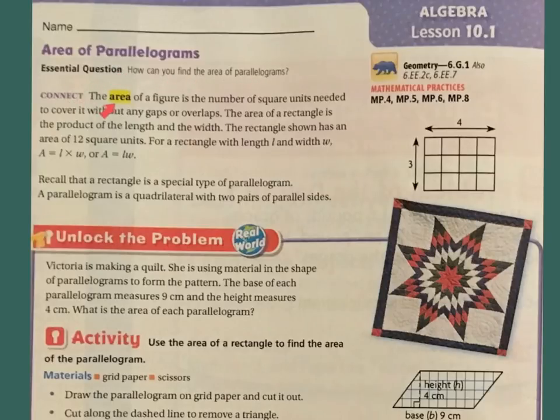Connect. The area of a figure is the number of square units needed to cover it without any gaps overlapping. The area of a square is the product of the length and the width. The rectangle shown has an area of 12 square units. For a rectangle with length L and width W, A equals L times W, or A equals LW.